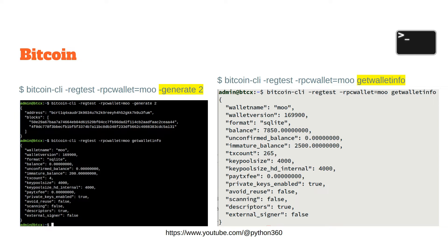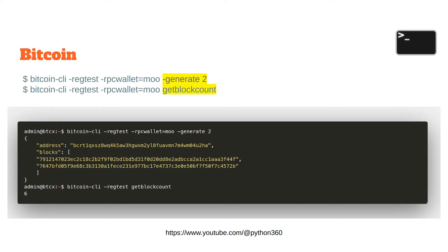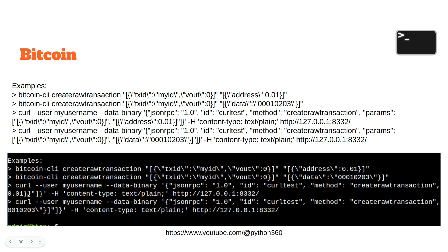With wallet equals 'mu', I ran generate two then get block count to check how many blocks there are. I generated two, and since I already had four, now I have six. If you type the wrong command or want help, you get some suggestions which are pretty helpful.